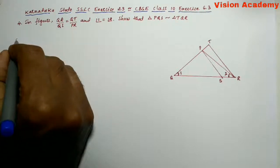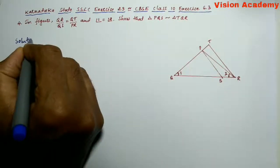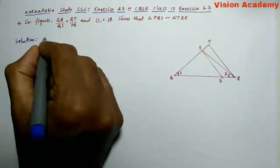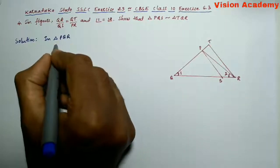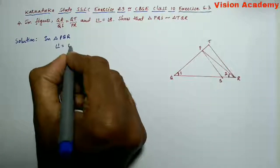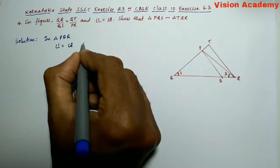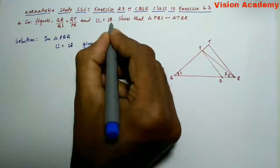Now let us find the solution for the given problem. Here in triangle PQR, angle 1 is equal to angle 2, which is already given in the question.